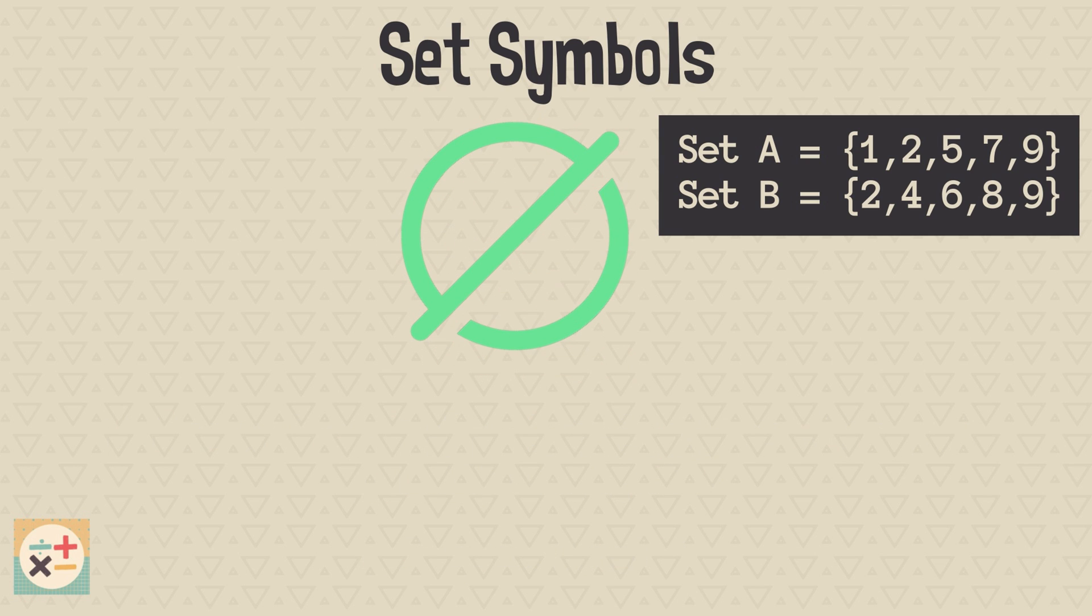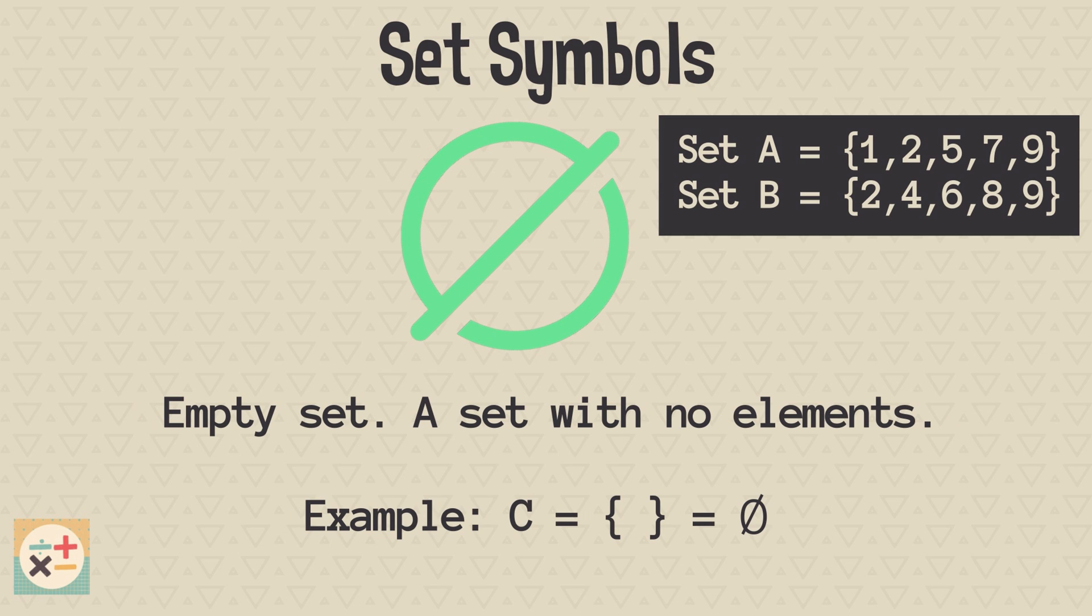Next up we have this symbol. It represents a set containing no elements, an empty set, which is also known as a null set. In this example, we can see that set C is an empty set, as it doesn't contain any elements.